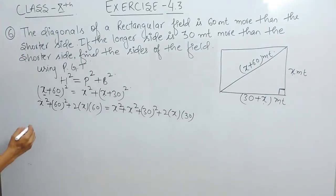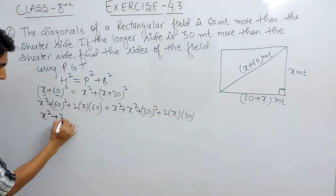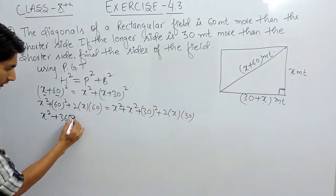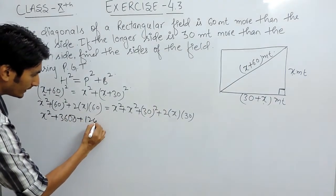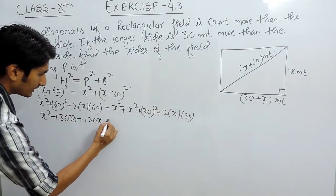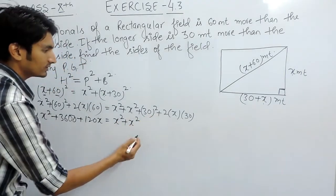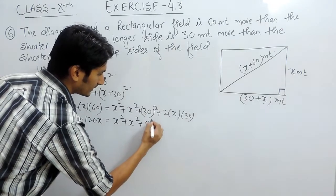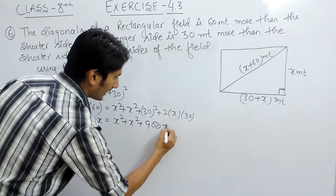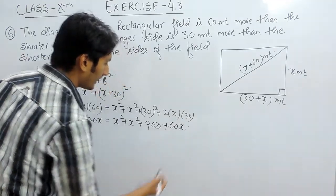Solving this: x squared plus 60 squared plus 120x equals x squared plus x squared plus 30 squared plus 60x. Here 60 squared is 3600 and 30 squared is 900.